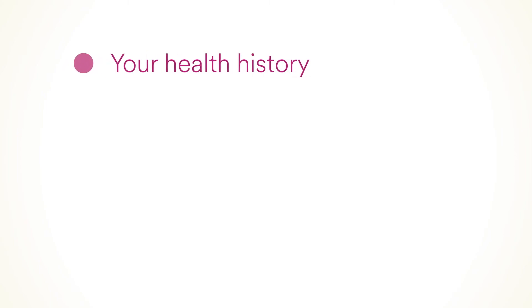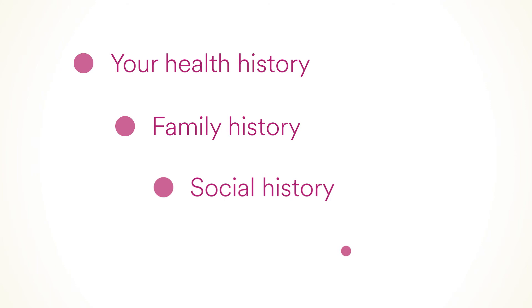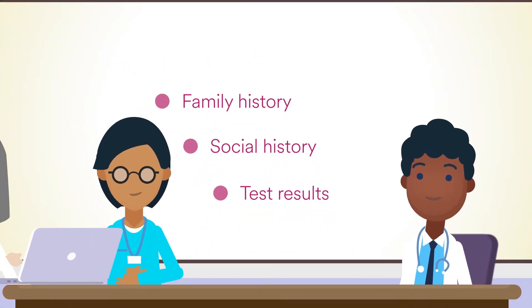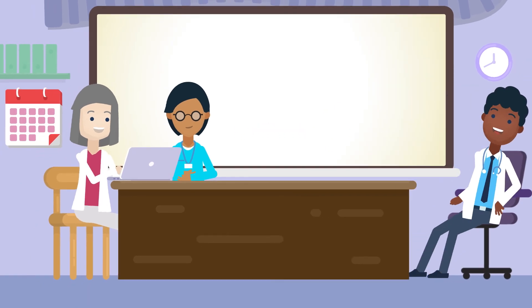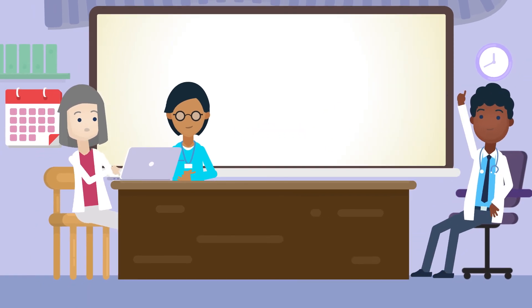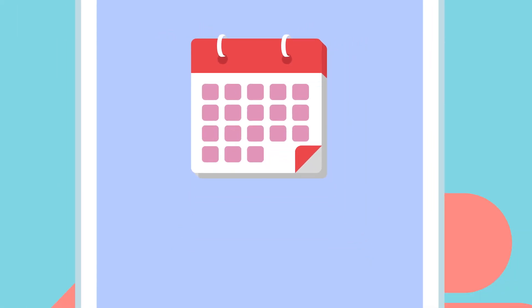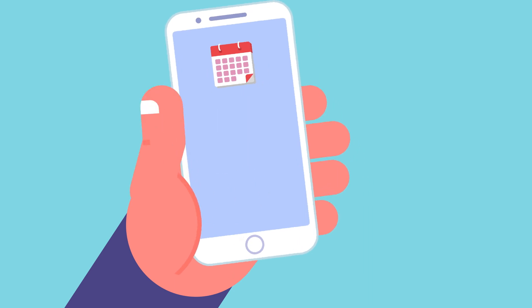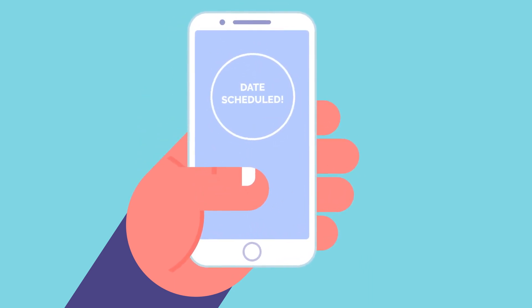Once your evaluation is complete, your health information including your health history, family history, social history, and test results will be reviewed at a meeting with many of the team members you learned about earlier. The team carefully considers all of the information presented, and a decision is made regarding your eligibility to donate. Once your eligibility to donate is determined, members of the transplant team will work with you to schedule a date for the surgery.